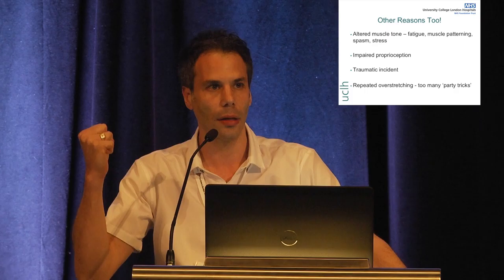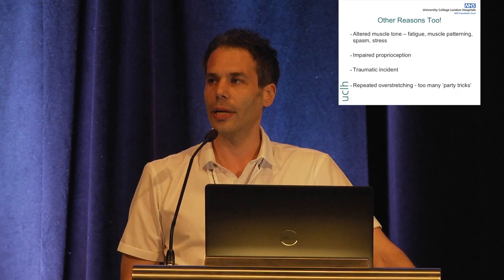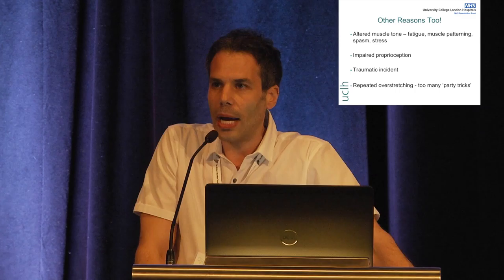Muscle spasm is a major reason why joints dislocate. Muscles suddenly bunch up, tighten, spasm, and exert a pulling force. They also act as a preventative measure stopping the joint from being able to get back in again. Stress is another reason why joints can sometimes slip out or dislocate.